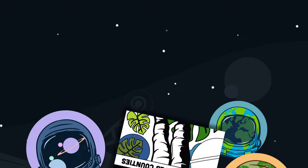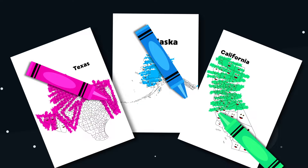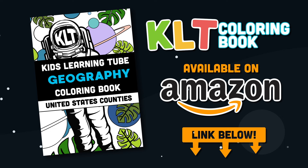This is the founder of KLT, Matthew. I'm very excited to announce we have our first book out now — it's a coloring book of the 50 states. Get it on Amazon today, click on the link in the description below the video.